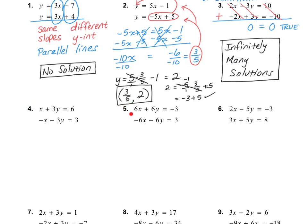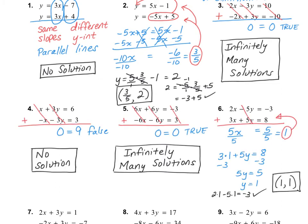Numbers 4, 5, and 6 are done pretty much the same way. Go ahead and solve them on your own — pause the video and turn it back on when you're done. For number 4, I got no solution. For number 5, I got infinitely many solutions. And for number 6, I got one solution, and that solution was (1, 1). Please pause the video and check your answers. If you got anything wrong, see if you can find your mistakes.